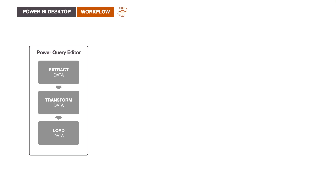The raw data coming from different sources is typically not clean, has formatting issues, and is not in the right shape for analysis and reporting purposes. For this reason, we have to perform data cleaning and transformation. This will typically involve removing unwanted columns, dealing with duplicate values and blanks, applying the right formatting, adding columns, renaming columns, merging queries, appending queries, and many more things in order to clean, format, and reshape data to make it ready for analysis and reporting.